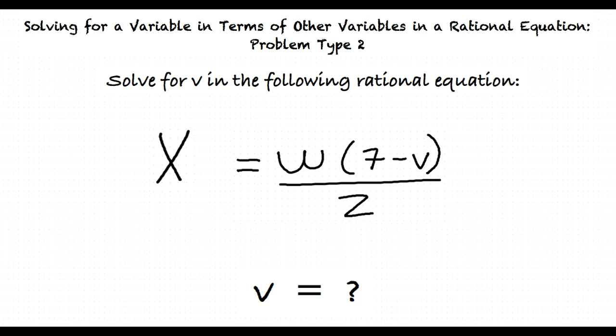First, we should multiply both sides by z, right? That's right. This results in xz equals w times 7 minus v.